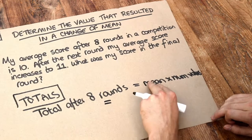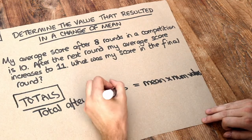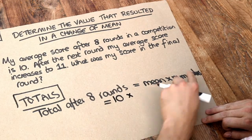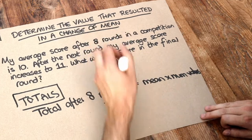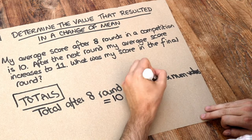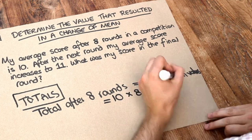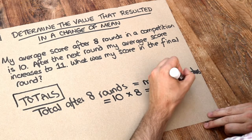So that's going to be the mean, which was 10 points, times by how many values there were, how many rounds in this case, which is 8. So that must mean we had a total of 80 points after 8 rounds.